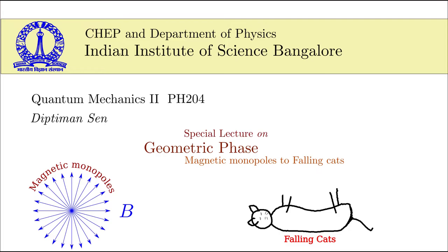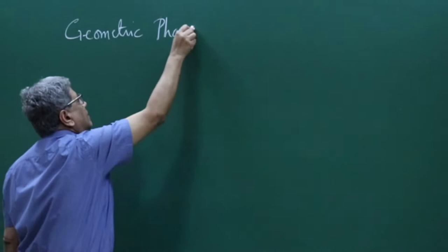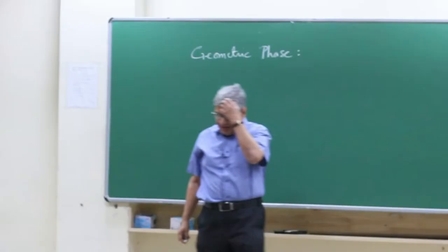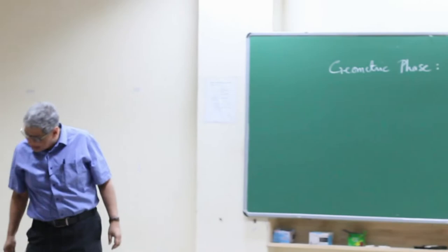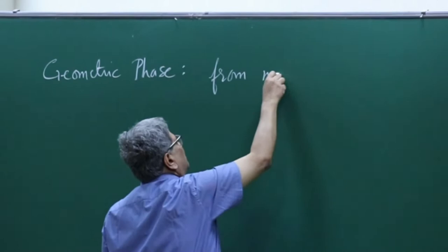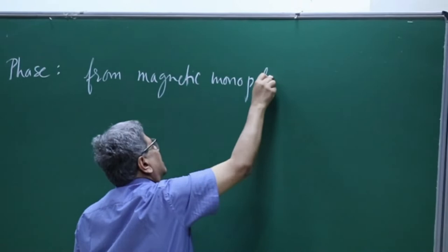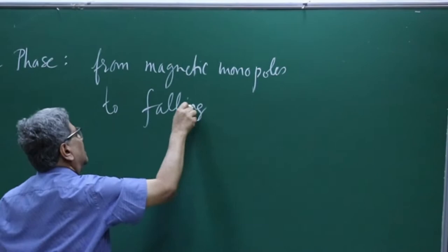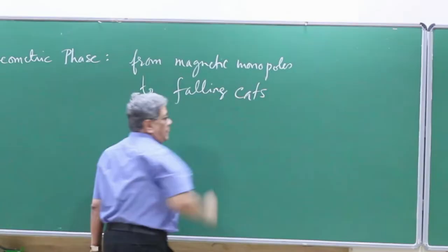Welcome to this class on Geometric Phase. The subtitle is 'from magnetic monopoles to falling cats', and you will see how these appear in this talk.